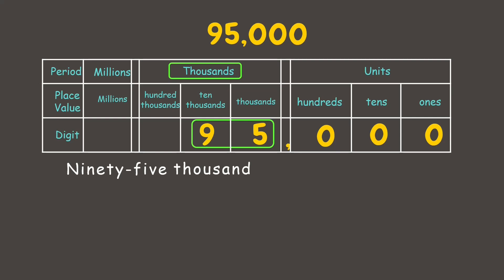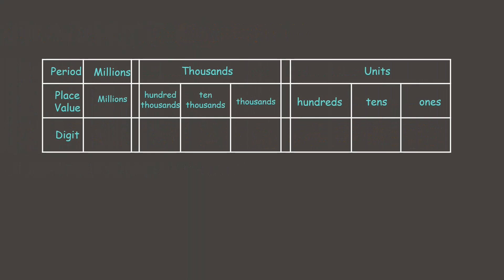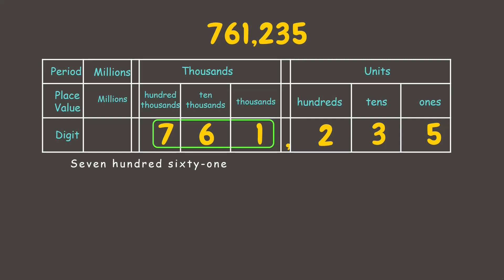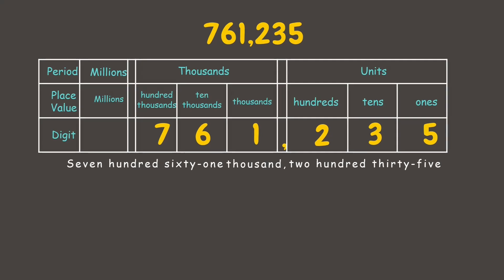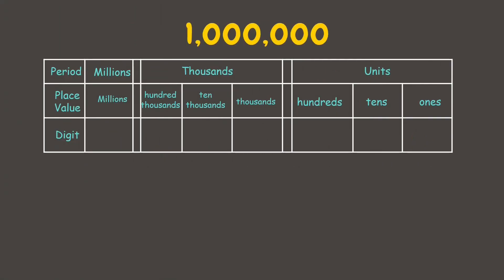Now let's move on and try another one. How about this number? Again, let's place each number in its correct place value. Now let's start with this period. We have 761 under the thousands place, so that's 761,000, and under the units we have 235. Now we read it as 761,235.